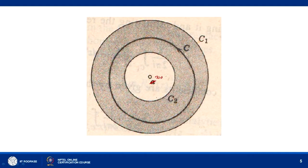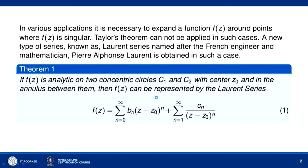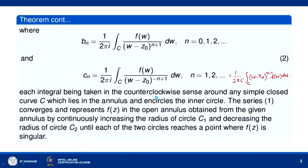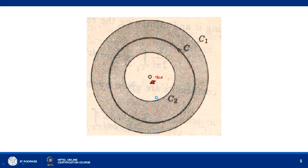The Laurent series converges and represents f(z) in the open annulus obtained from the given annulus by increasing the radius of C1 and decreasing the radius of C2 until we reach a singular point or a point where the function is not analytic. That is the region of convergence of the Laurent series.